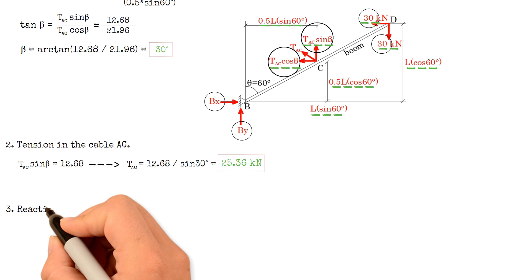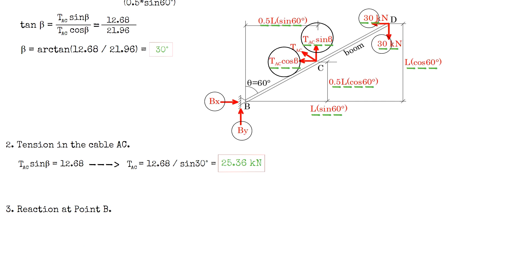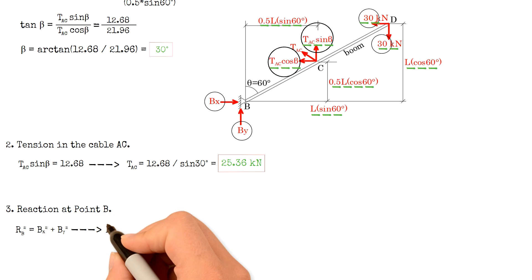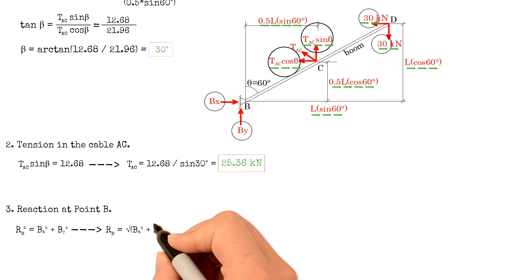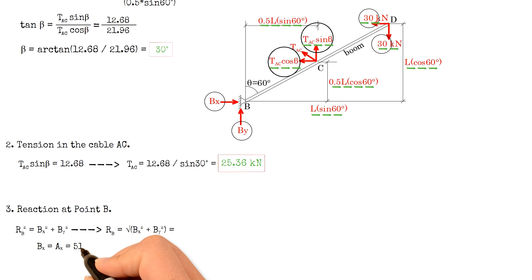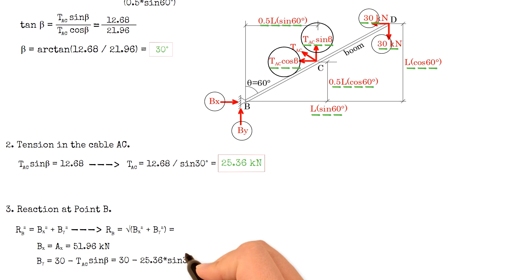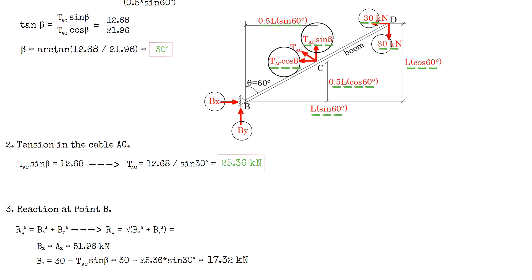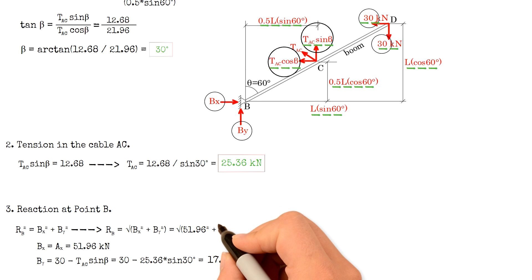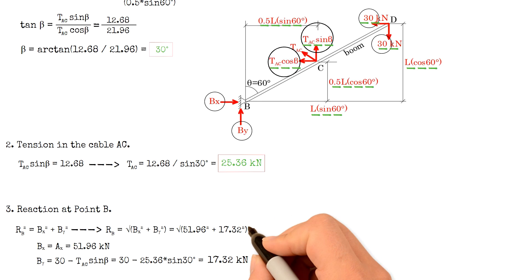The last question is the reaction at point B. Using the Pythagorean theorem, the reaction RB equals the square root of BX squared plus BY squared. Since BX equals AX, the value of BX is 51.96 kN. Solving for BY: 30 kN minus tension AC times sine of beta gives 17.32 kN. Therefore the reaction at point B equals the square root of 51.96² plus 17.32², and the result is 54.77 kN.